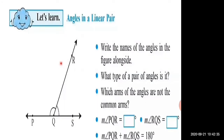Now let's do one activity. Open your textbook, page number 29. Observe the figure and answer the questions. Question 1: write the names of the angles in the figure. You can write in the chat box. The angles are angle PQR and angle RQS.